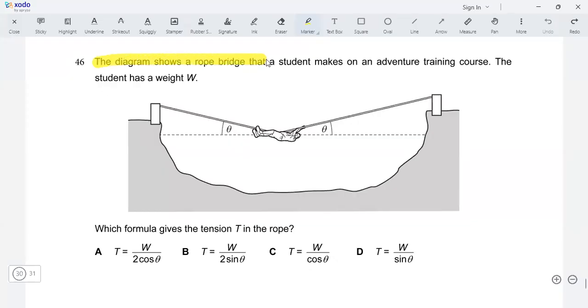The diagram shows a rope bridge that a student makes on an adventure training course. The student has a weight W, which formula gives the tension T in the rope. Okay, so we need to find out a formula that links tension and W.